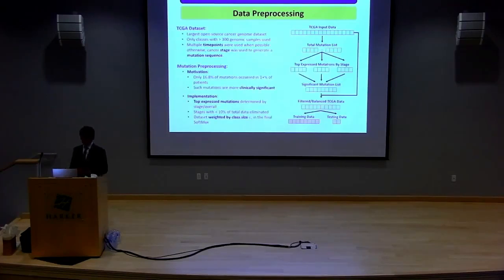So for the first step is data preprocessing. And as I said, I worked with the TCGA dataset, which is the Cancer Genome Atlas. It's the largest open source cancer genomics dataset, and what I did is I analyzed each class with more than 300 patients. And to generate these mutation sequences that I addressed, I used multiple time points. For example, if there are multiple biopsies and genetic analyses performed, I would use those as multiple time points to quantify the sequence. And if not, I would use cancer stage. For example, this is a method that has become more prominent in the past two years. But if we think about it, a cancer stage one normally comes before stage two, comes before stage three, comes before stage four. So even if we don't know the exact time in which these mutations occur, if we know at what stage these mutations occur, we can come up with a pseudo-time sequence.